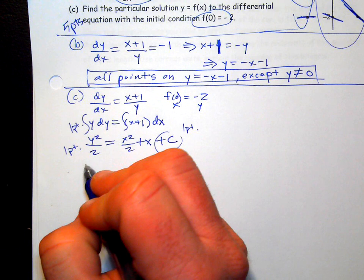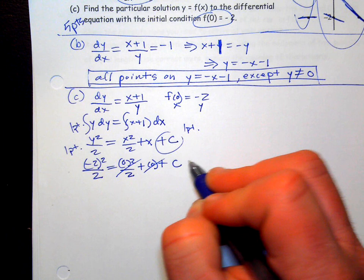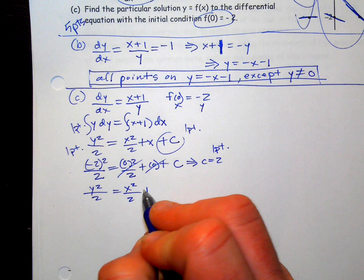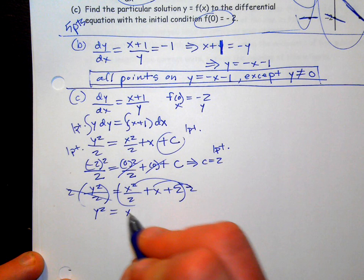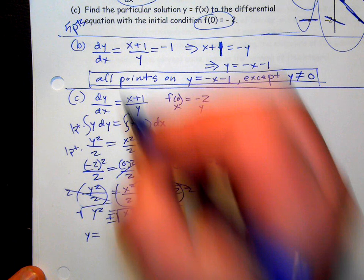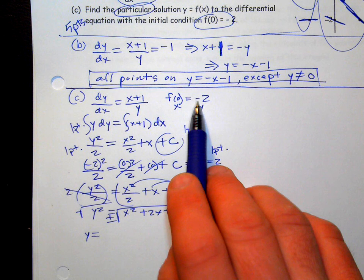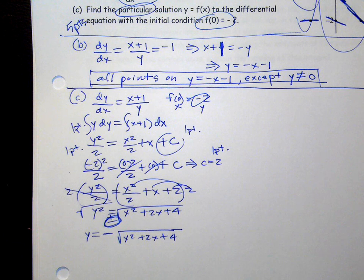Plug in the initial condition: y = −1, x = 0. So (−1)²/2 = 0²/2 + 0 + C, giving C = −1/2... wait, actually plugging in gives 1/2 = C... and solving: y² = x² + 2x + 4, then take the square root — plus or minus. Since we need a particular solution, plug in x = 0: y = ±√4 = ±2. It should come out negative, so we take the negative square root: y = −√(x² + 2x + 4). But you also need to state the domain.